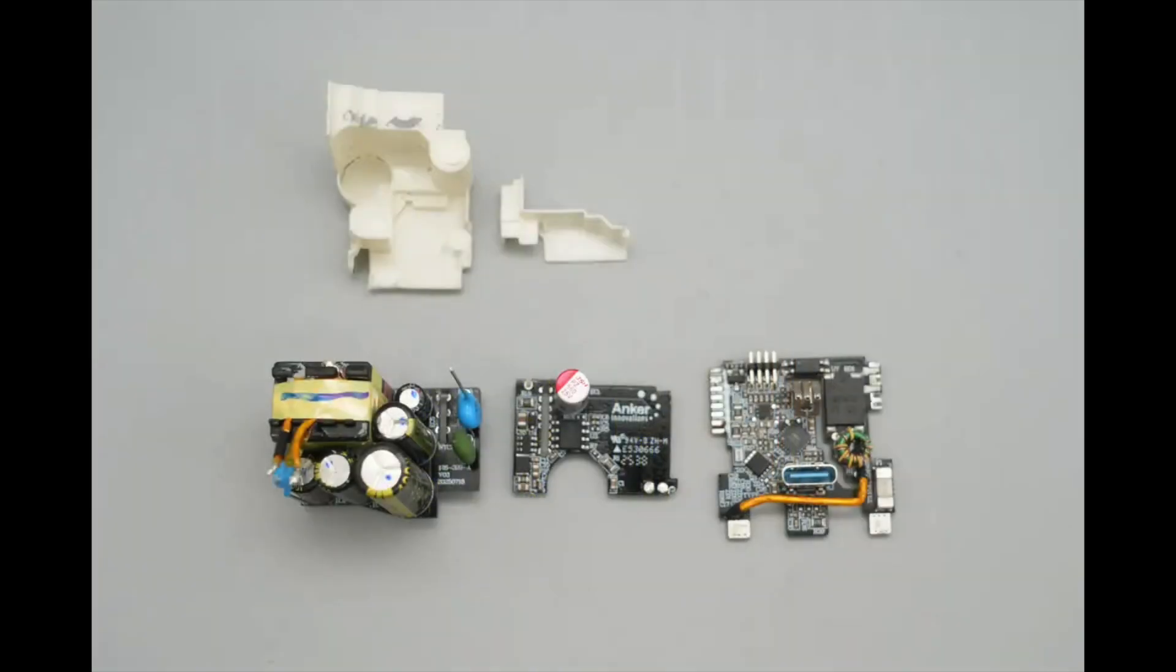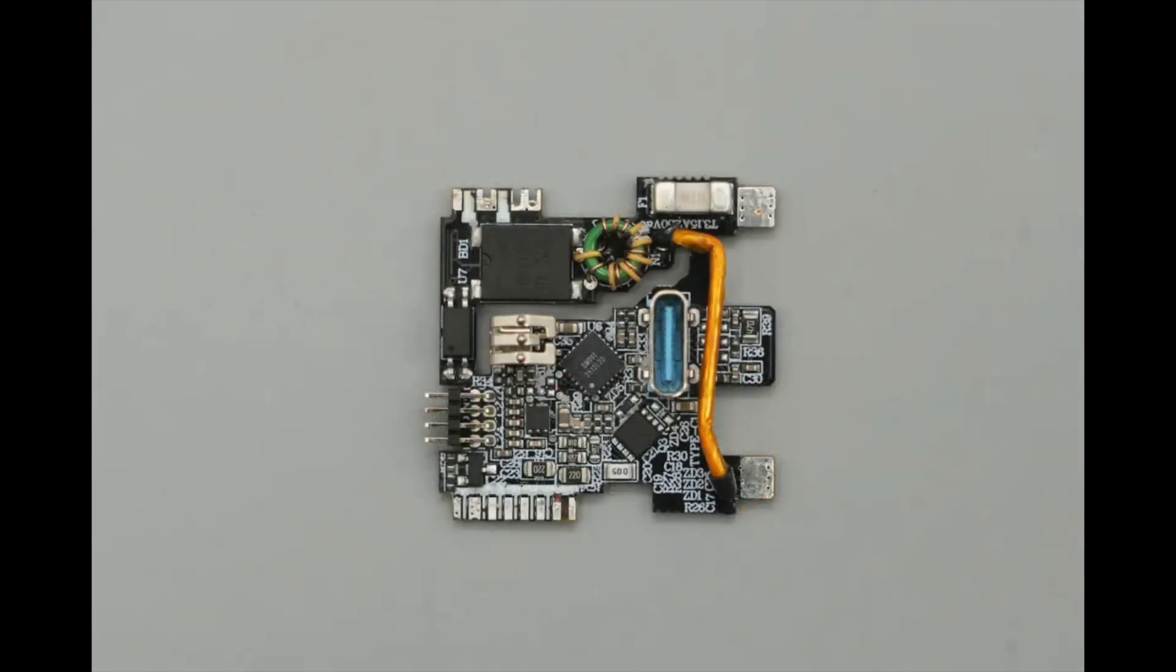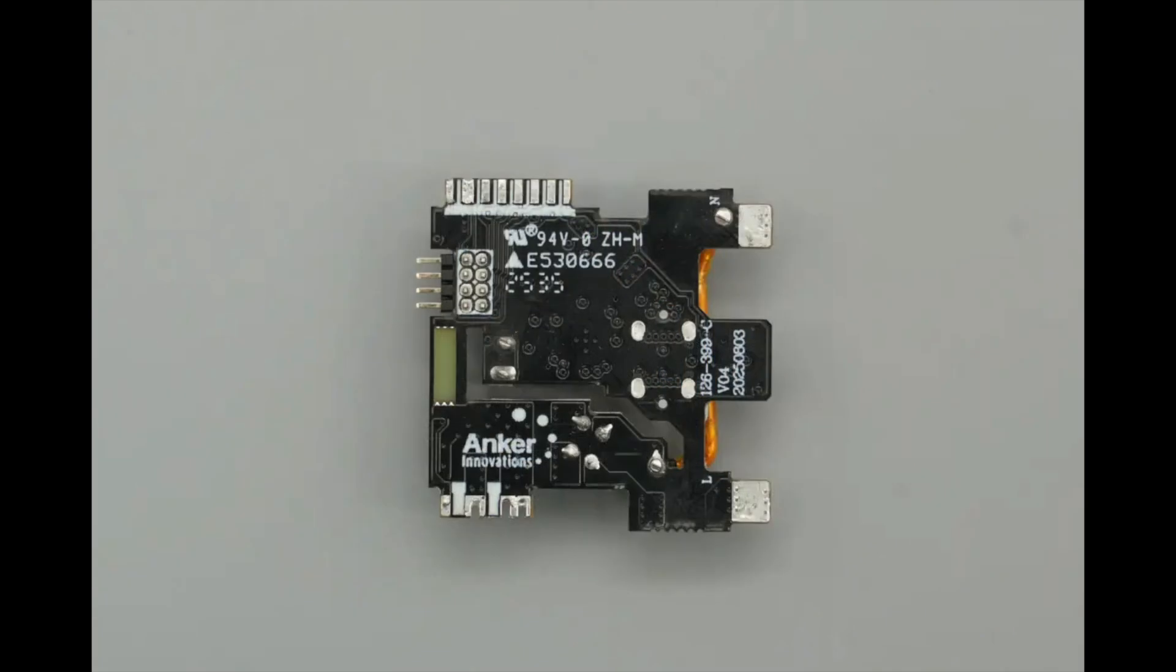The PCBA module is disassembled into three separate PCBs. The first PCB uses a cutout to separate the primary and secondary sides. Its front side houses components such as an SMD fuse, common mode choke, bridge rectifier, optocoupler, protocol chip, and output V-bus MOSFET. The back side has no components.